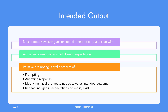ChatGPT is not perfect, nor are you. To get a response which is exactly as you intended is often a pipe dream even for skilled users of ChatGPT. Slowly but gradually, you come to expect a certain behavior from ChatGPT and adapt your prompts to add instructions, context, and other things to nudge ChatGPT towards your intended output. This cyclic process of prompting, analyzing the response, and then re-prompting with modifications is known as iterative prompting.